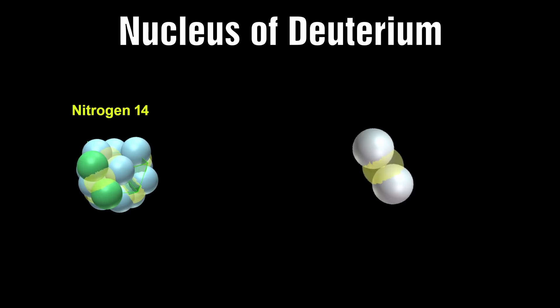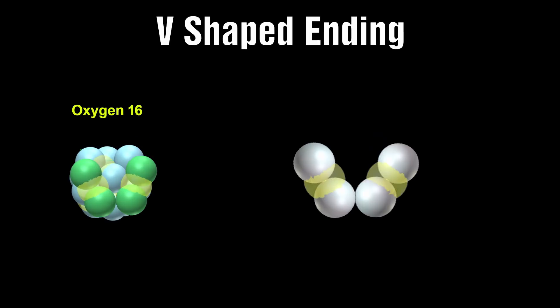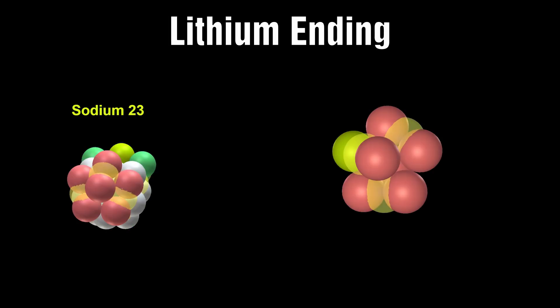A nucleus of deuterium: two protons joined by an inner electron, in other words, a deuteron. A V-shaped structure: two deuterons in a V-shaped structure. A nucleus of lithium: a ring of five protons with a capped proton on one side of the ring packed into three deuterons.